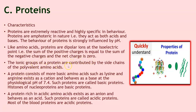The ionic groups of a protein are contributed by the side chains of the polyvalent amino acids. A protein consisting of more basic amino acids such as lysine and arginine exists as a cation and behaves as a base at the physiological pH of 7.4 — such proteins are called basic proteins; histones of nucleoproteins are basic proteins. On the other hand, a protein rich in acidic amino acids exists as an anion and behaves as an acid — such proteins are called acidic proteins; most blood proteins are acidic proteins.